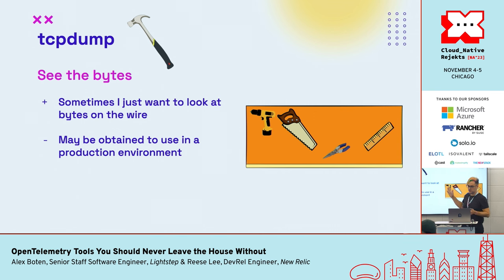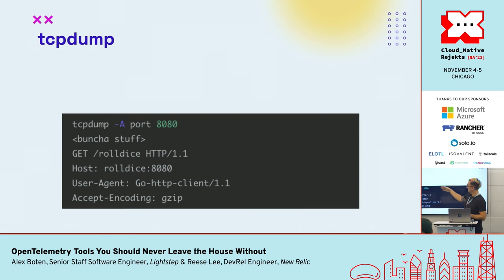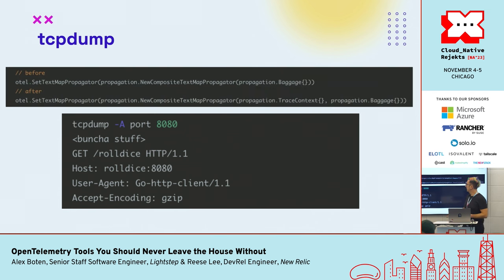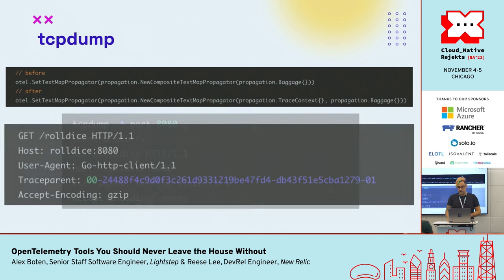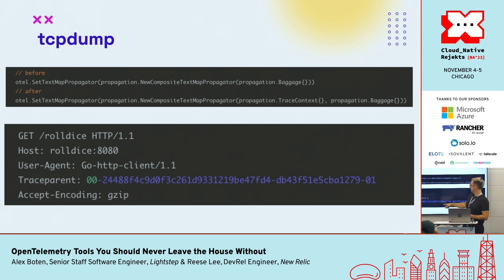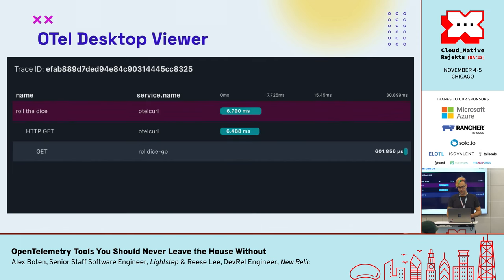I want to give a shout out to one of my favorite tools of all time: TCP dump. Sometimes it's easier to look at the bytes on the wire than trying to debug application code. I did a TCP dump on the port for my Go server, and sure enough you could see there was no request header including any information about the trace. I remembered that I had forgotten to set up the trace context propagator in the client code. Once I added that, I could see the traceparent header — which includes the span ID and trace ID — and my trace was finally connected.